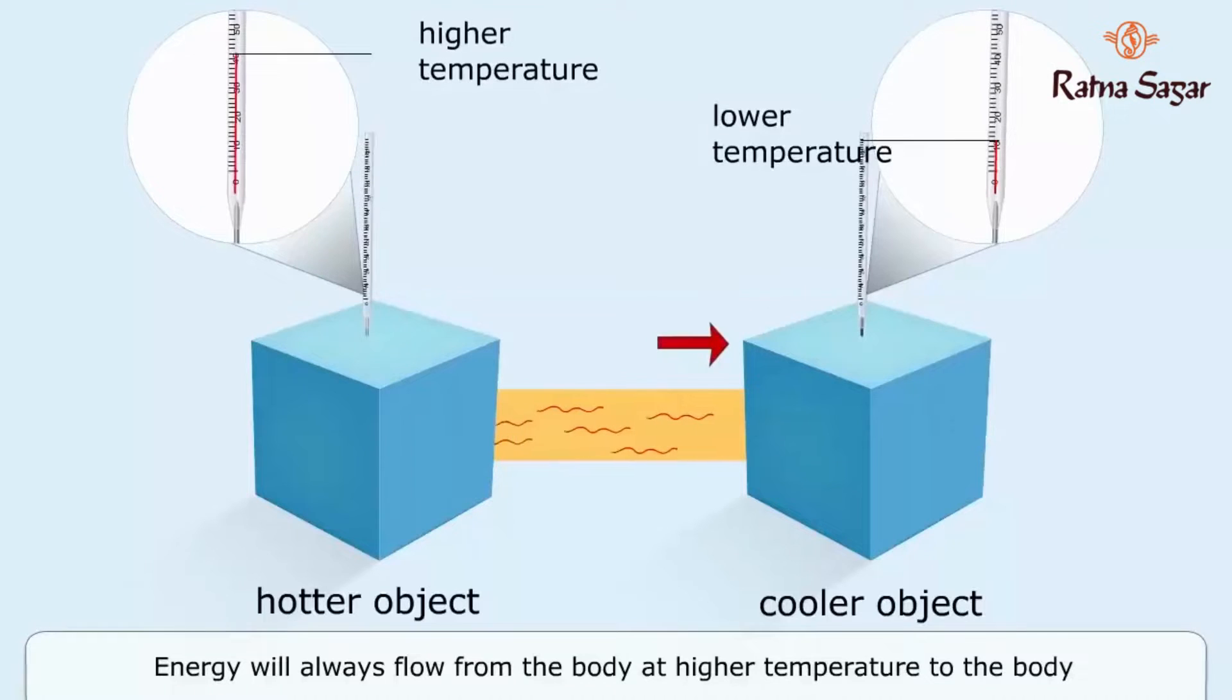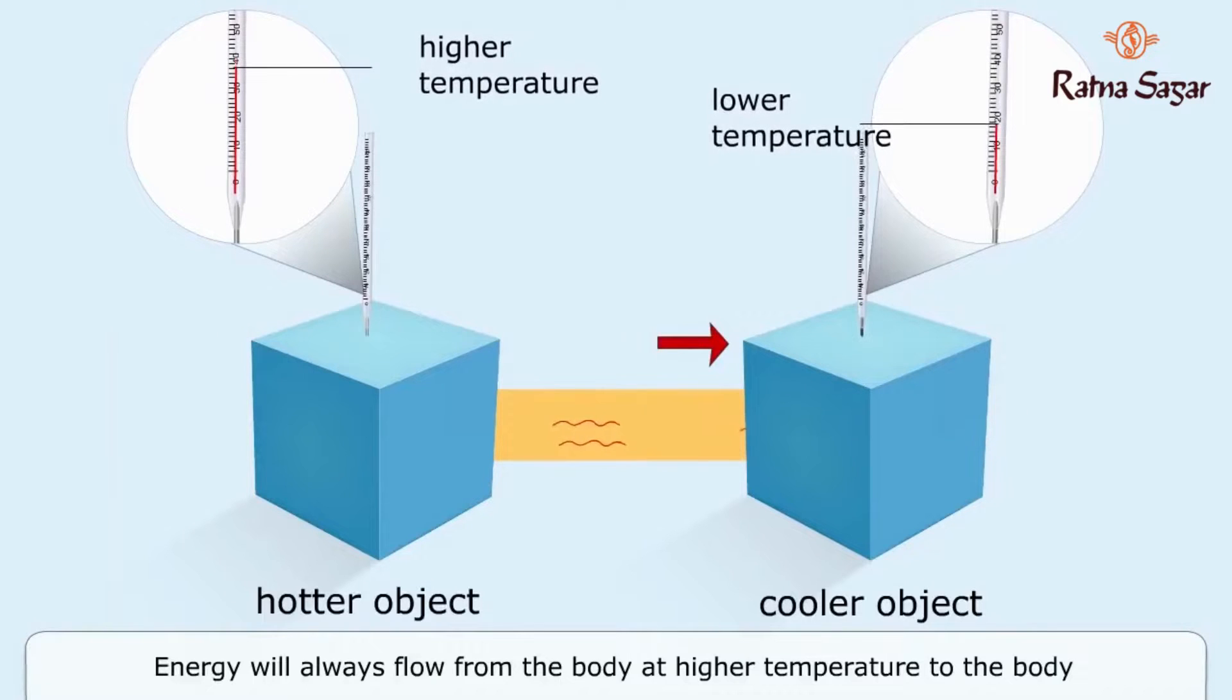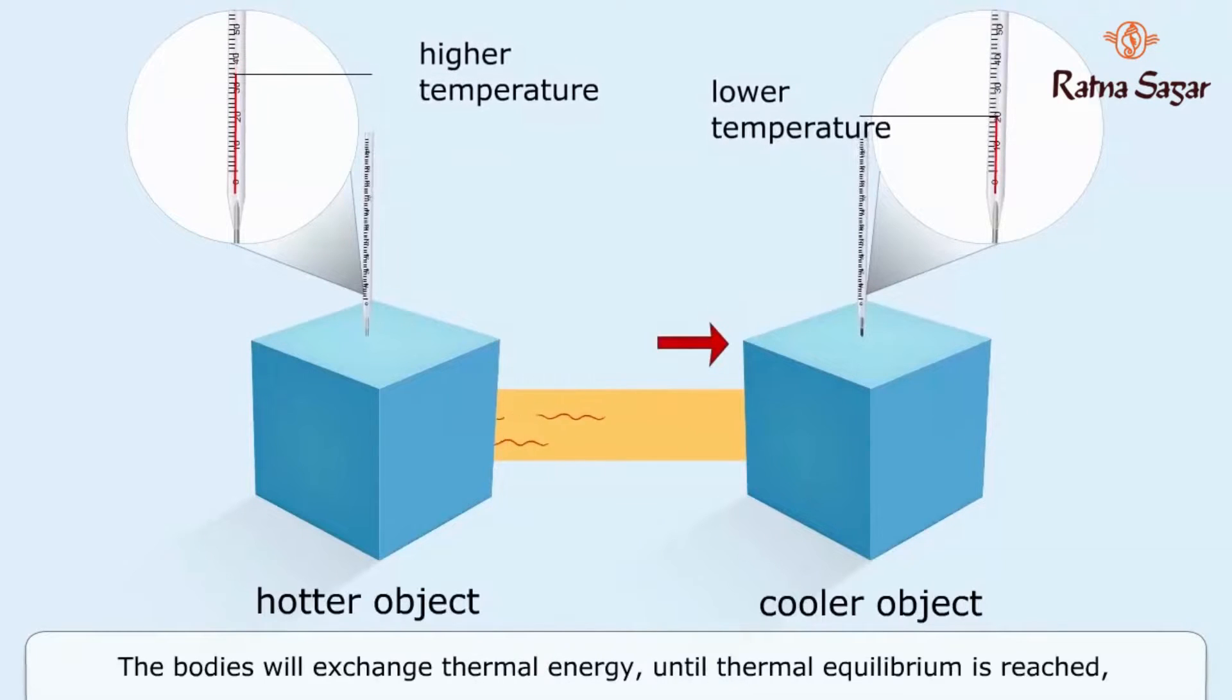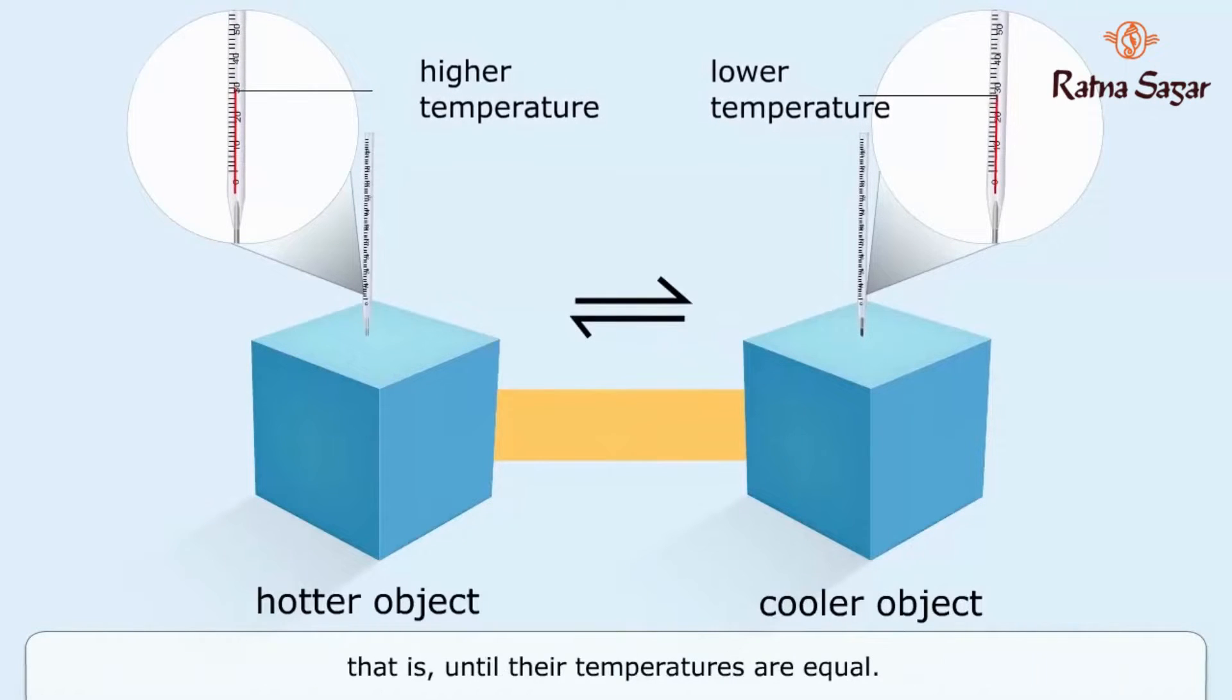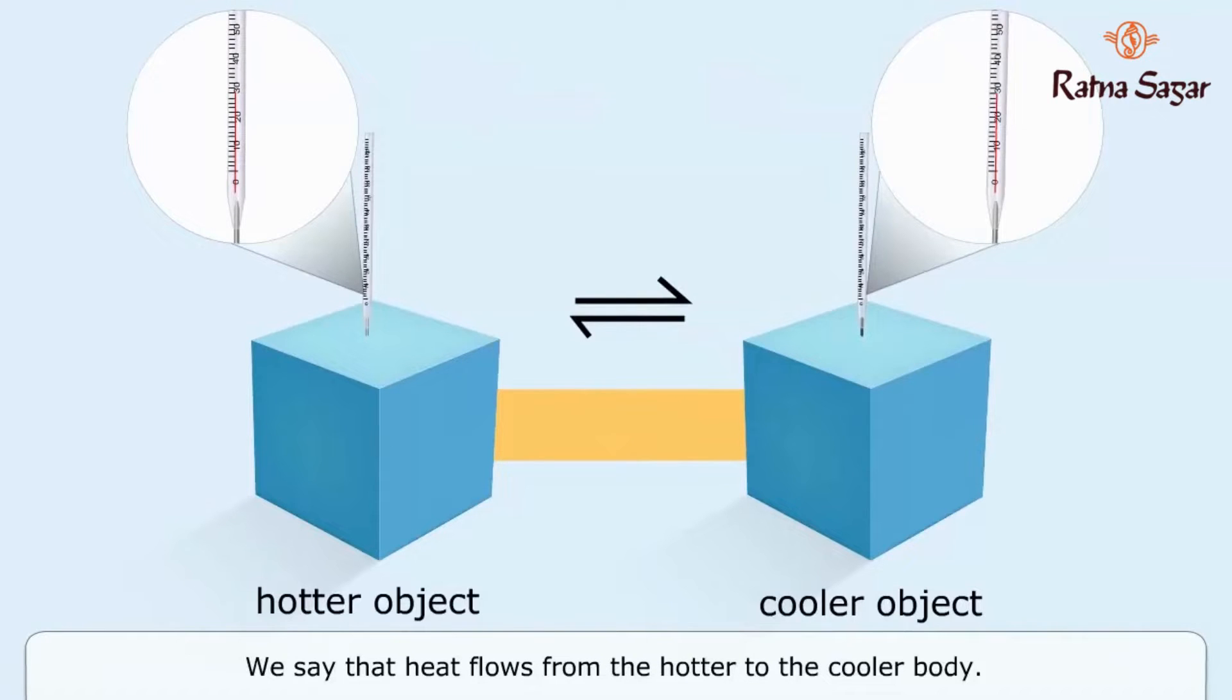Heat energy will always flow from the body at higher temperature to the body at lower temperature. The bodies will exchange thermal energy until thermal equilibrium is reached, that is, until the temperatures are equal. We say that heat flows from the hotter to the cooler body.